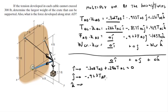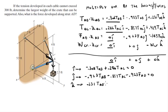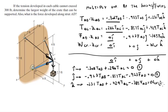For the j-equation (Equation 2): -0.923 T_AB - 0.857 T_AC - 0.923 F_AD = 0. We'll call the i-equation Equation 1, the j-equation Equation 2, and the k-equation Equation 3, and solve them algebraically.